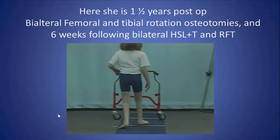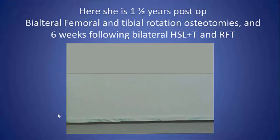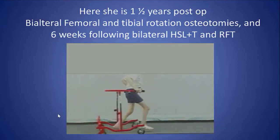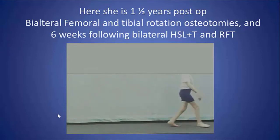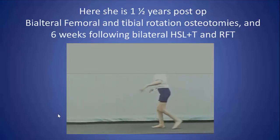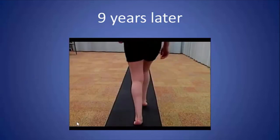Here she is six weeks post soft tissue surgery, along with her plate removal — she's still a little weak, but she became an independent ambulator without any assistive device. Here she is nine years later in her senior year of high school, wearing a t-shirt with a logo that says 'Keep Calm and Graduate.'